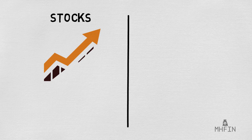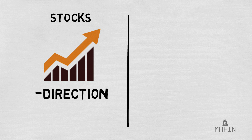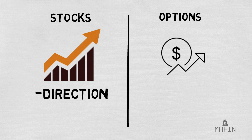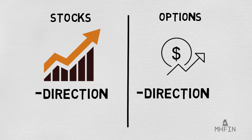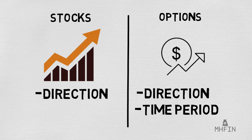In order to understand Theta, you have to get down to the basics of understanding what makes options unique compared to stocks. When you buy a stock, you are in essence betting on direction, which is whether a stock will go up or down. The same is true when you buy options, but on top of betting on a direction, you are also betting on a time period. All options come with an expiration date, making option plays slightly more complex compared to stocks, which you can simply hold forever.